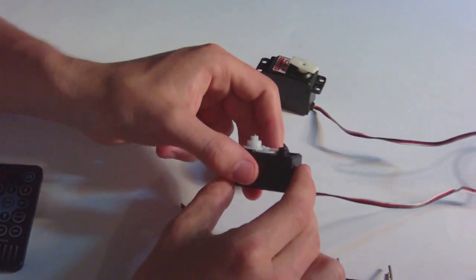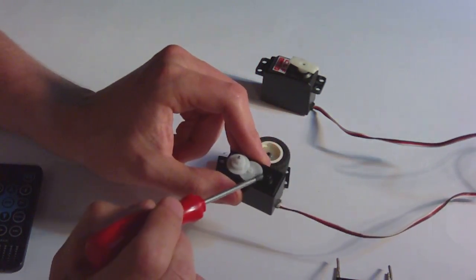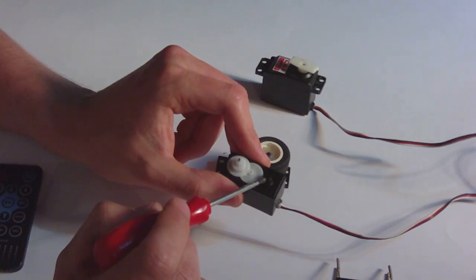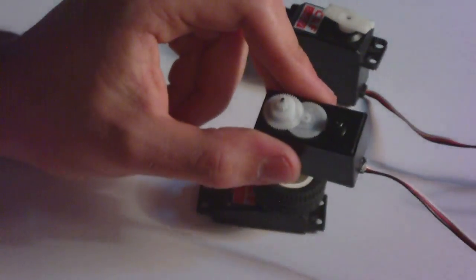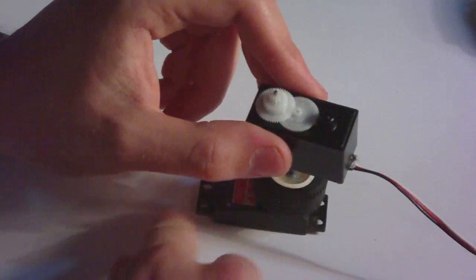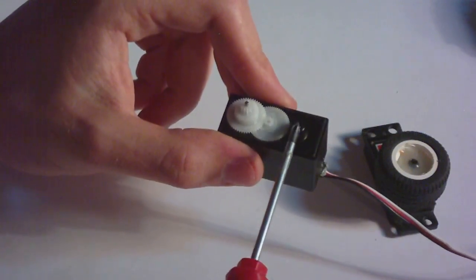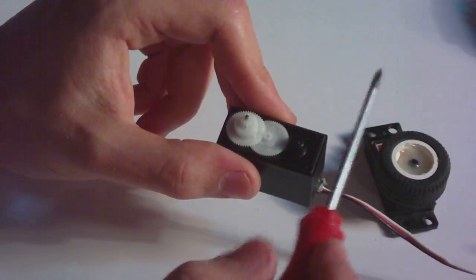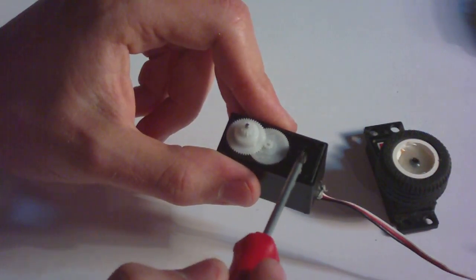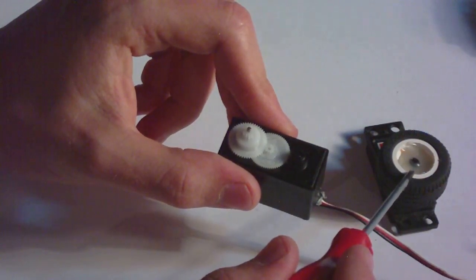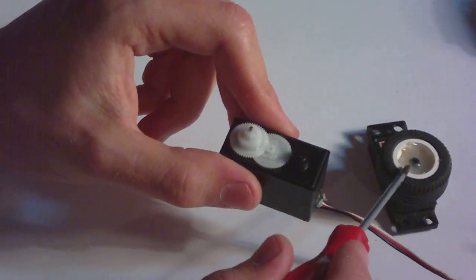All you have to do for continuous rotation is disable this variable resistor. There is a variable resistor here which is directly attached to this wheel, so if this resistor would work, it would tell the position of this wheel and we would have a 160 degree servo.